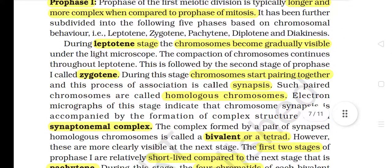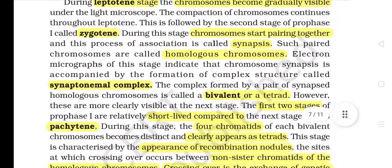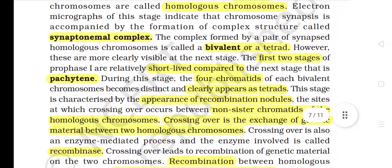During zygotene, chromosomes start pairing together and this process of association is called synapsis. Each pair of chromosomes are called homologous chromosomes. Electron micrographs of this stage indicate that chromosome synapsis is accompanied by the formation of a complex structure called the synaptonemal complex. The complex formed by a pair of synapsed homologous chromosomes is called a bivalent or a tetrad, though these are more clearly visible at the next stage.